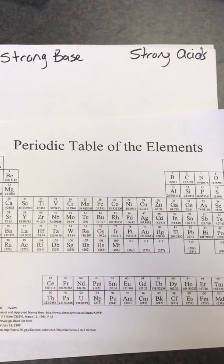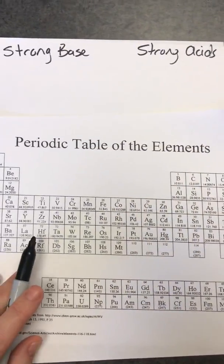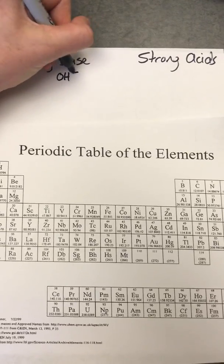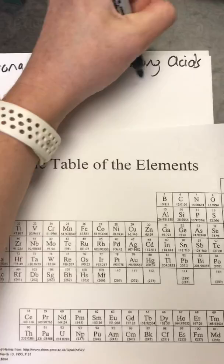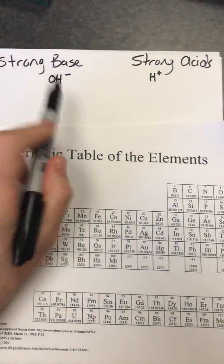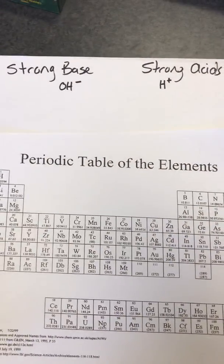So today we're going to look at methods for memorizing strong bases and strong acids using the periodic table. When we're looking at a strong base, what we're looking at is something, for now, that's going to be paired with an OH-. When we're looking at strong acids, it's something that's paired with an H+. So at least one OH- is going to be in a strong base, and at least one H+ is going to be in a strong acid.